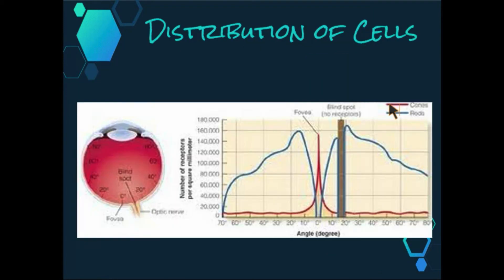So now let's move on and have a look at the distribution and the function of the different types of photoreceptors. As we can see in this graph, rods, which are represented by the blue line, are evenly distributed across most of the retina, but are absent in the point of central vision known as the fovea, which is this bit here.